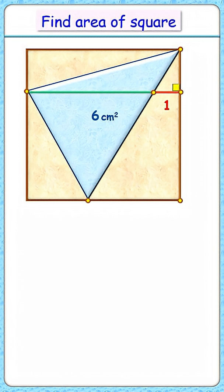This question is very interesting to solve. Can you find the area of this square, where the given area of the triangle is 6 cm² and the length of this red line segment is 1 centimeter? Let's check the solution.